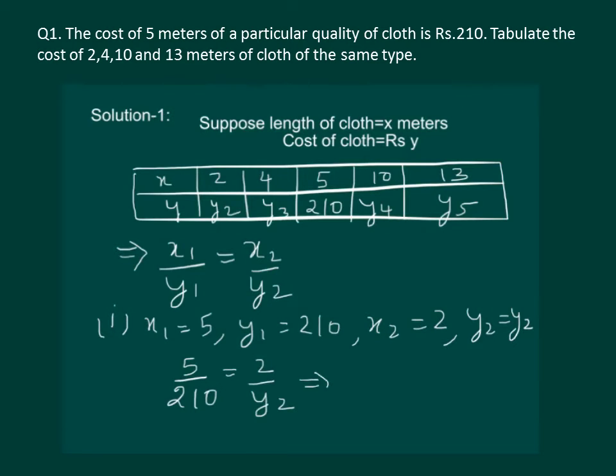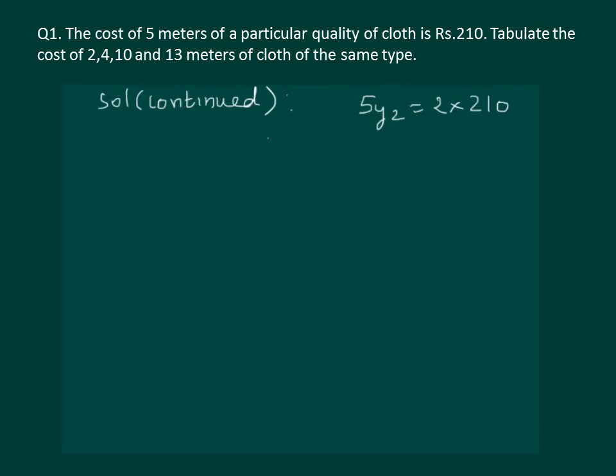Let us cross multiply we get 5y2 is equal to 2 into 210. Let us solve further we get y2 is equal to 2 into 210 whole by 5. On solving we will get y2 is equal to 84. That is for 2 meters of cloth one has to pay 84 rupees.